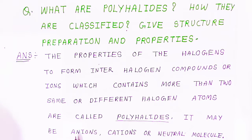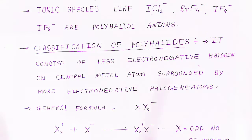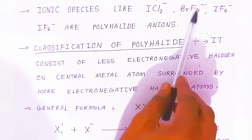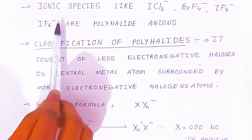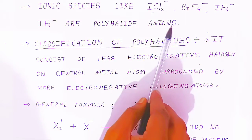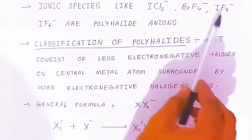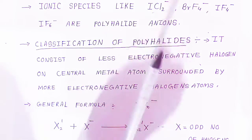Polyhalides may be anions, cations, or neutral molecules. Ionic species like ICl2-, BrF4-, IF4-, and IF6- are polyhalide anions. ICl2- is iodine dichloride ion, BrF4- is bromine tetrafluoride ion, IF4- is iodine tetrafluoride ion, and IF6- is iodine hexafluoride ion.